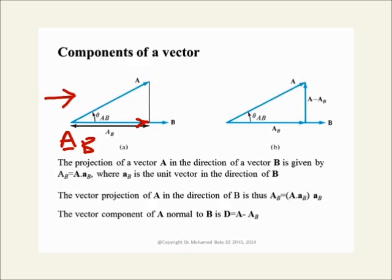The other component, which is normal to B, I denote as AB normal. This is the component of A normal to B.